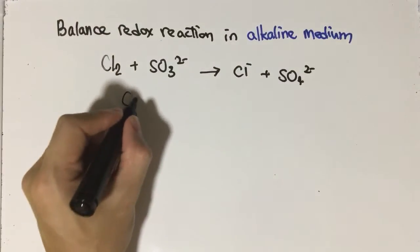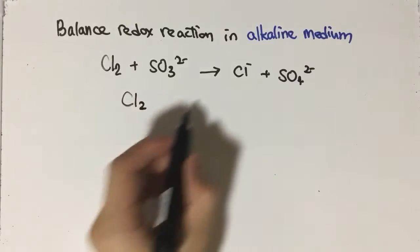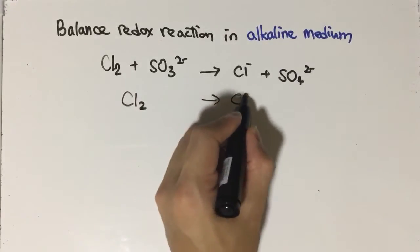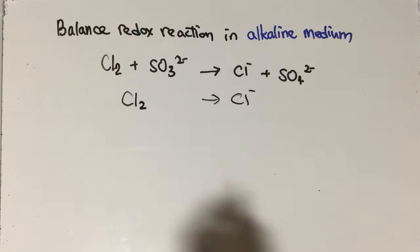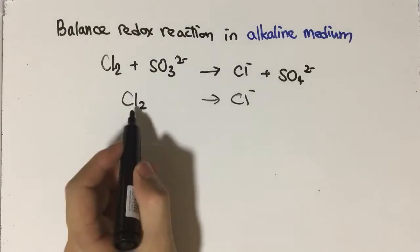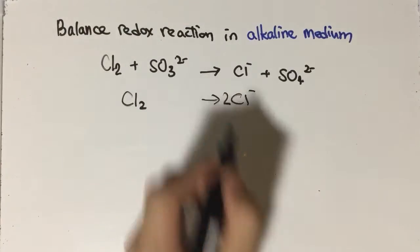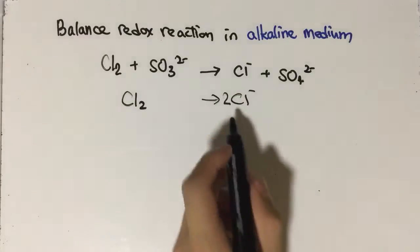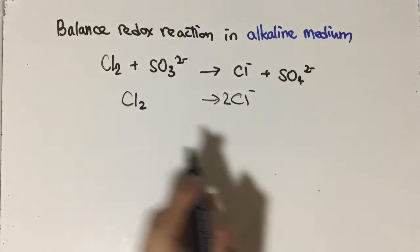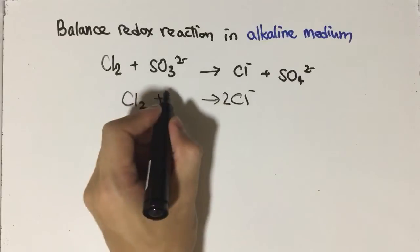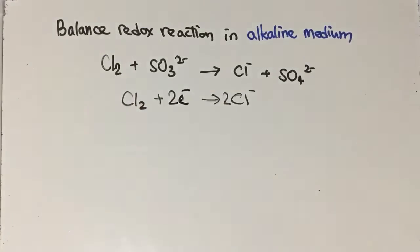This one will be very simple. Chlorine molecule becomes chloride ion. Firstly, you balance the chlorine, so here we have two chlorine atoms. Secondly, you balance the charge to get two minus, so you add two electrons: Cl₂ + 2e⁻ → 2Cl⁻.